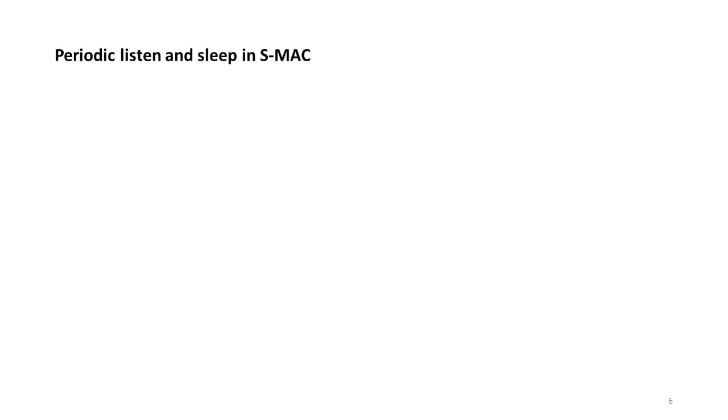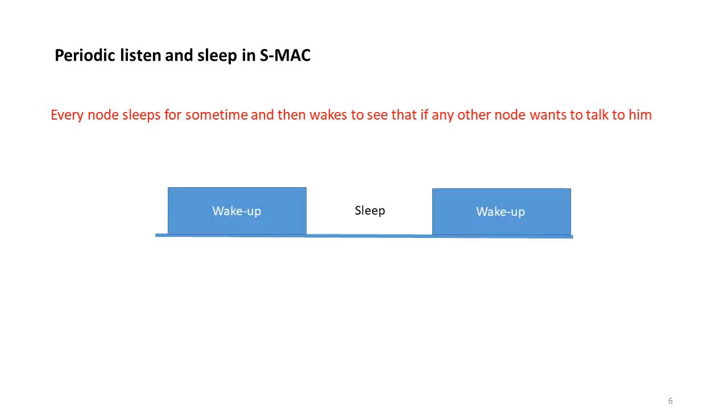To avoid energy waste, Sensor MAC Protocol makes use of Periodic Listen and Sleep method. In this method, every node sleeps for some time and then wakes to see if any other node wants to talk to it. From the diagram, we can see that rather than being active for the entire period, the sensor node will sleep for some time and be in wake mode for some time. In sleep mode, it switches off its transceiver and thus saves energy.